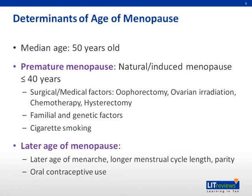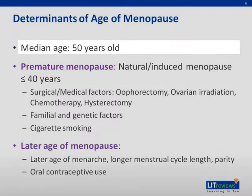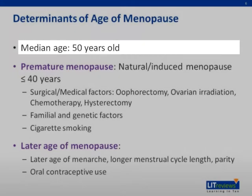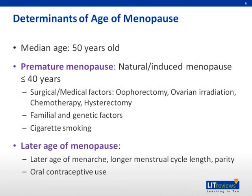There are various factors which determine the age of menopause. The median age of menopause is 50 years old, but ranges from 45 to 55 years worldwide.